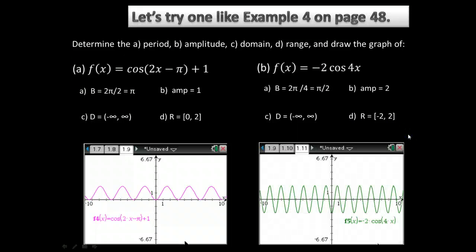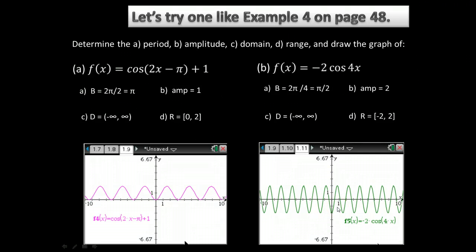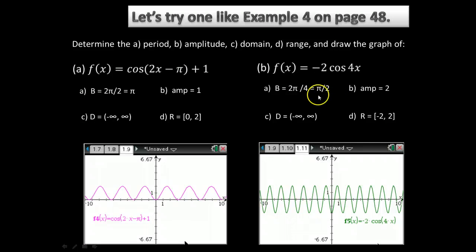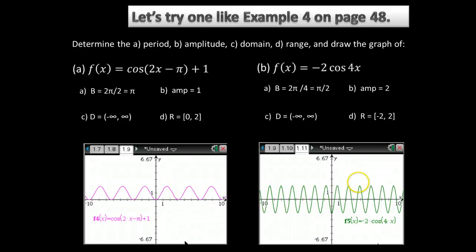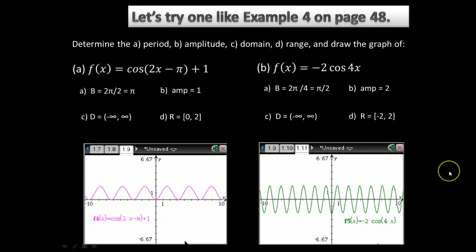And here is our graph. So you can see our graph has gotten taller because of that amplitude. It's also sort of squished together because the period now, instead of being stretched out over 2π to complete itself, is completing itself in only π over 2. That's why it seems to be squished together.